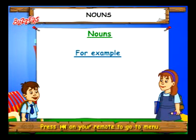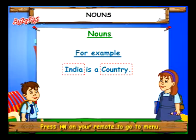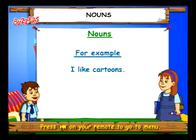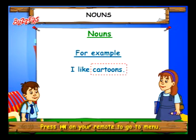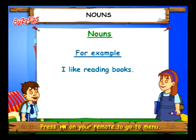For example, India is a country. In this sentence, India and country are nouns. I like cartoons. In this sentence, cartoons is a noun. Similarly, in the sentence I like reading books, books is a noun.